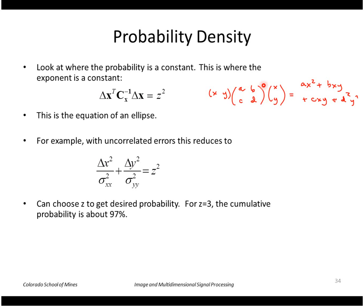Multiplying that out we get an expression like this which is in the form of an equation of an ellipse. If the off diagonal elements are zero, the b and c are zero, this simply reduces to the simpler form of the ellipse here.